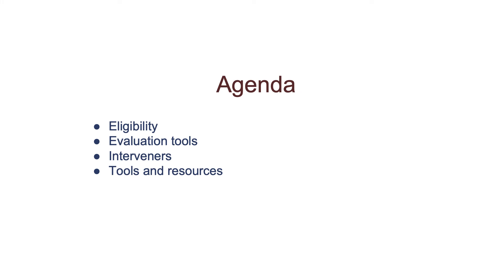Today I'm going to cover eligibility, both federal and state, and review some evaluation tools that might be helpful during the evaluation process, and talk a little bit about interveners and how to determine if your student may need an intervener, and also review some tools and show you where to find some resources.